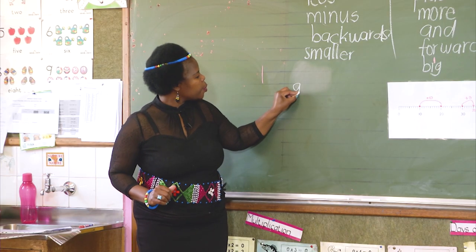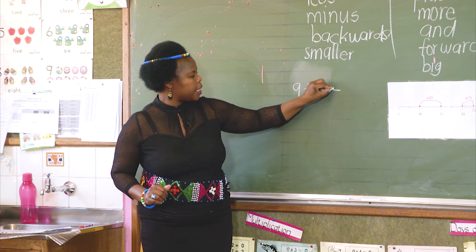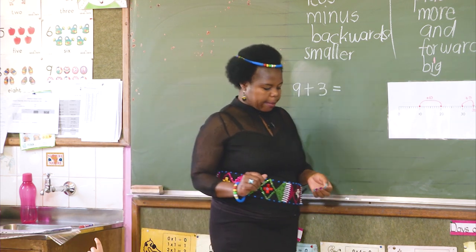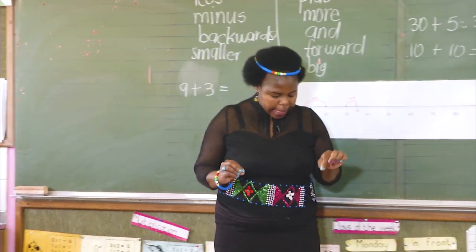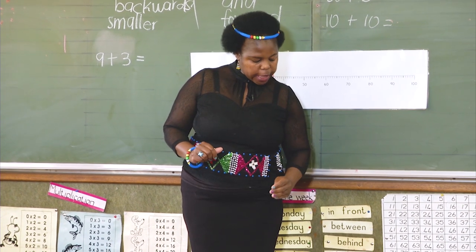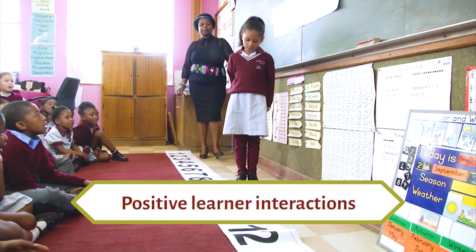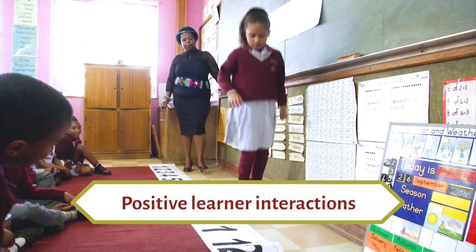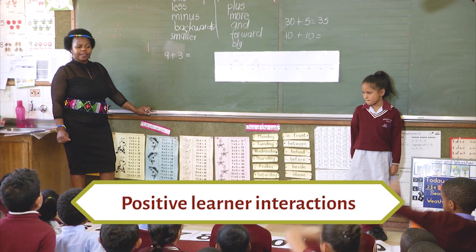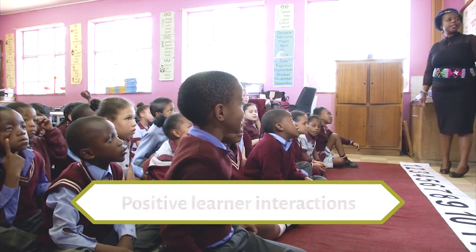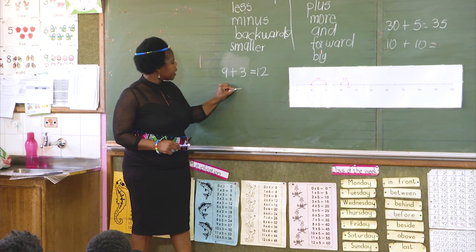The learners have to come to the front. I give them a sum and they come to the front to do the jumps. When it's a plus they count forward, and when it's a minus they hop backward to show they are taking away. We are going to do 9 plus 3. I want one person to come and plot, standing at 9 and making 3 hops. — I am standing on 9, jumping 3 jumps: 1, 2, 3. — What is the answer? — 12. — The answer is 12.